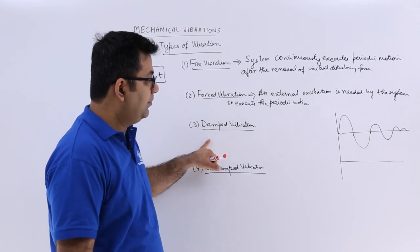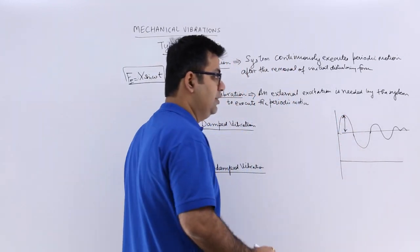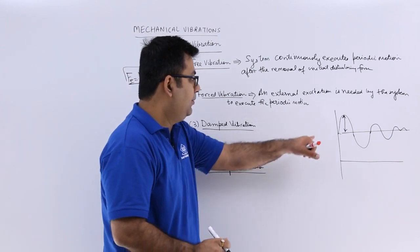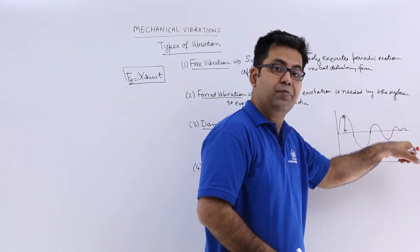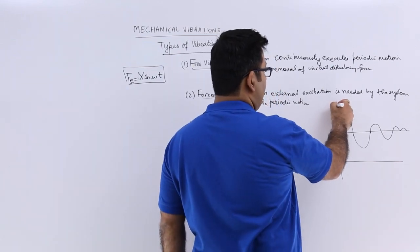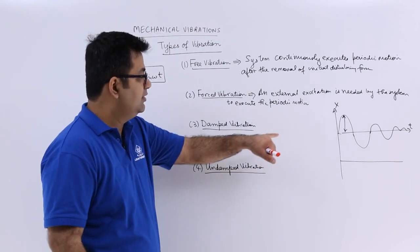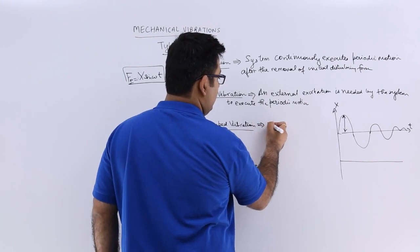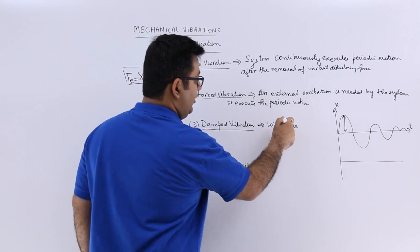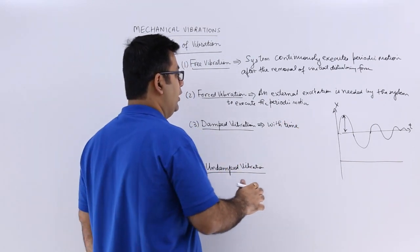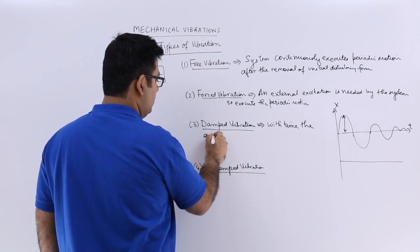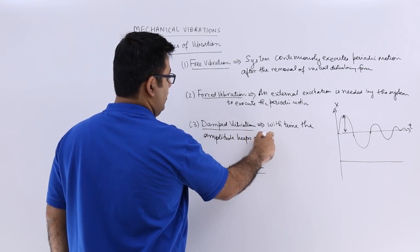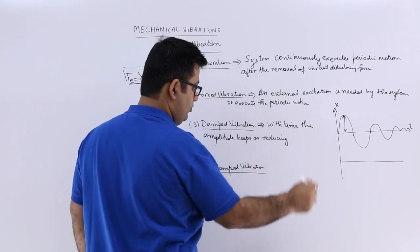When the amplitude—because this is the amplitude, this is the maximum displacement from the mean position—when the amplitude of this periodic motion keeps on decreasing as the time goes by, because this is a chart between amplitude and time, such a vibration is called damped vibration. With time, the amplitude keeps on reducing.